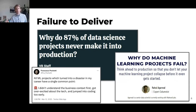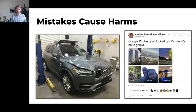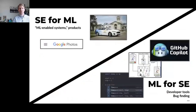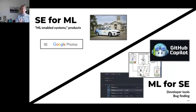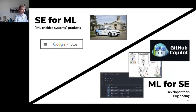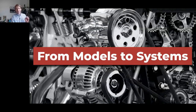It seems to be really hard to build products with machine learning components. Building software is hard already, but there are many reports suggesting it's very hard to go from a promising prototype model to a product that works reliably. We have a high potential for causing harm, whether that's physical harm or discrimination. Throughout this talk I'm going to focus on software engineering for machine learning — how software engineers can help build products with ML components, not ML for software engineering.